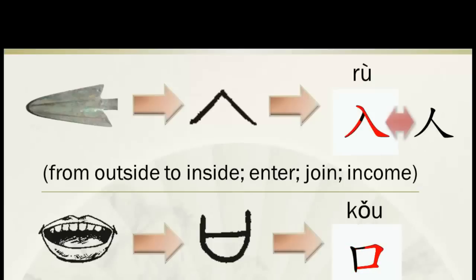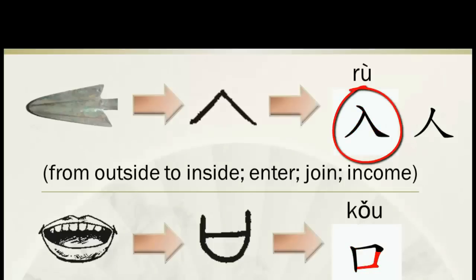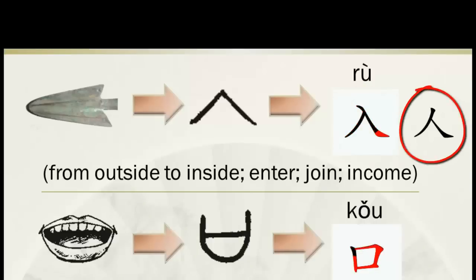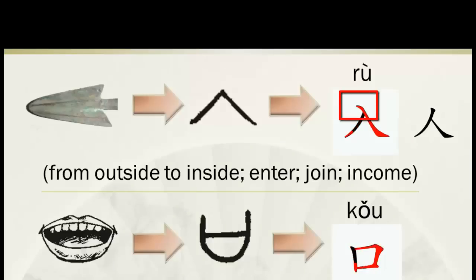Now let's compare this zi 入 with 人 (rén). Those two zi look very similar to each other. But for 入 (rù), the left part is shorter than the right part. For 人 (rén), it is opposite. When writing 入, to make it more clearly distinct, we bend down the top of the right part, so it looks less like 人.